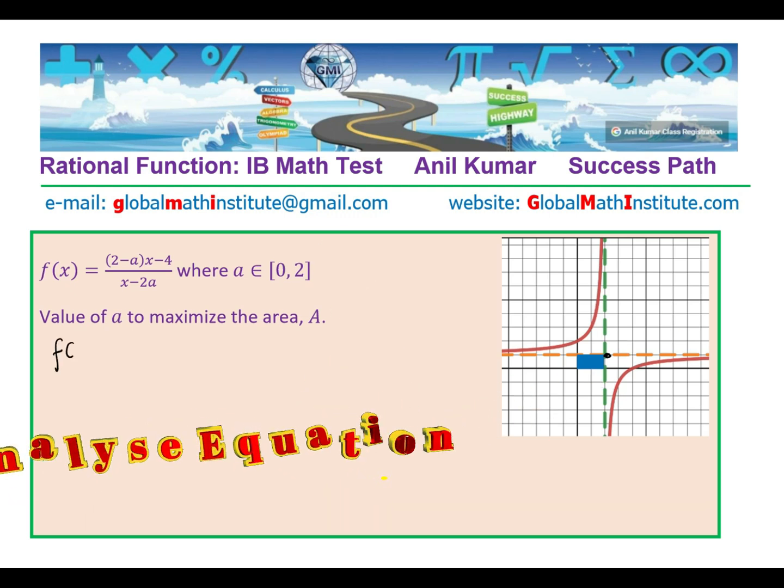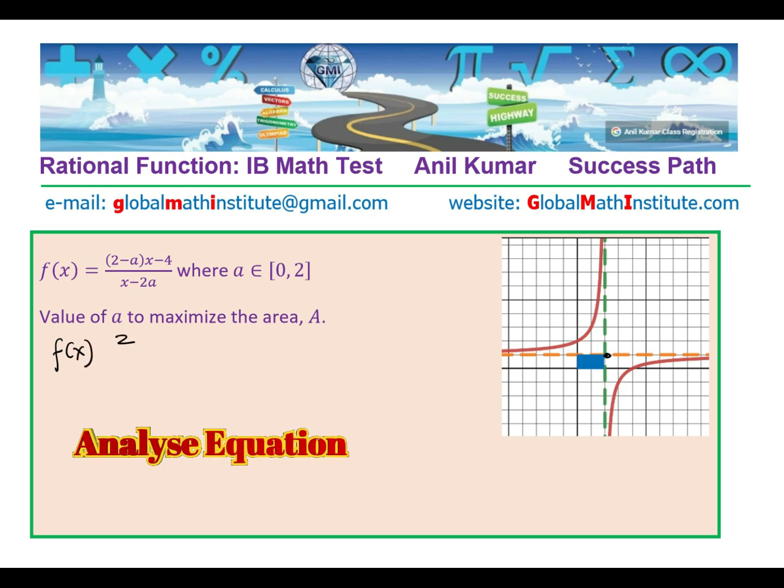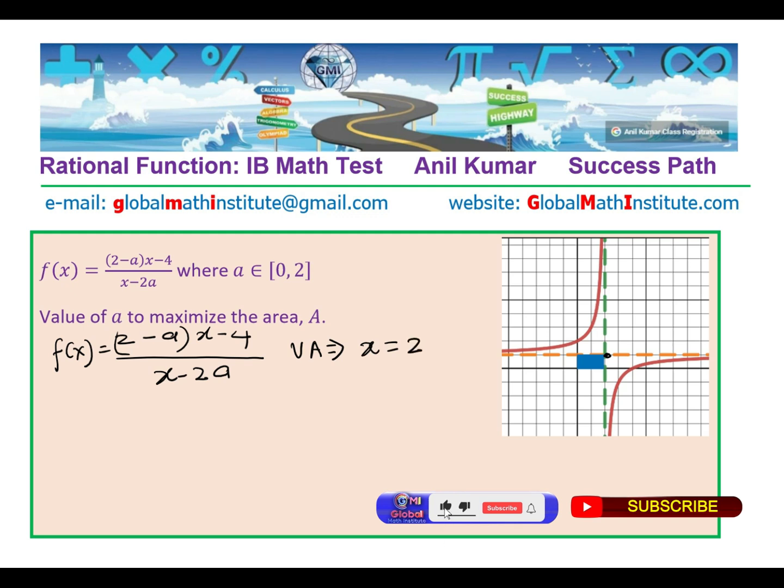Let us analyze this particular question once again. It says f(x) = (2-a)(x-4)/(x-2a). That means vertical asymptote should be at which point? It will be at 2a, right, x = 2a. So from this equation, this vertical asymptote is actually equal to x = 2a. So don't jump to the diagram and just get the values which are given to you.